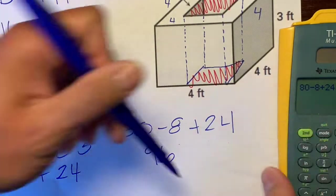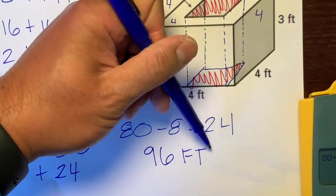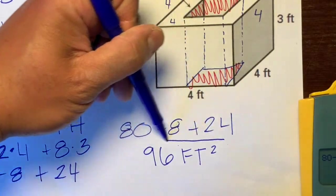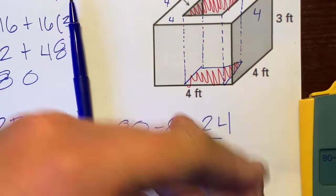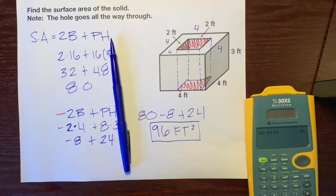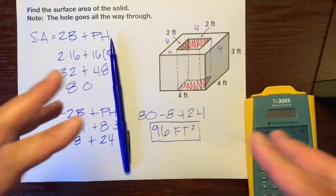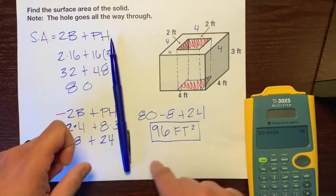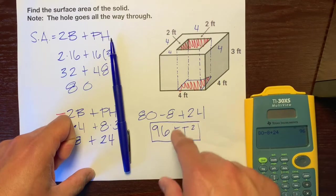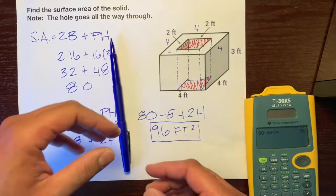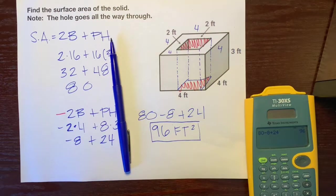96 feet squared. That's the number of squares that fit on all of the surfaces. If we dip this into paint and the paint touched all the surfaces, it would take 96 squares to fill up all the surfaces. Hope that helps. Have a great day.